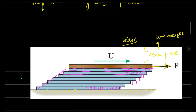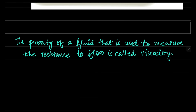If you look at this behavior, any upper layer wants to drag the lower layer in the forward direction, while the lower layer wants to drag the upper layer in the backward direction. There is a resistance against this kind of flow, and whenever a fluid possesses this property — resistance to flow — it is called viscosity.